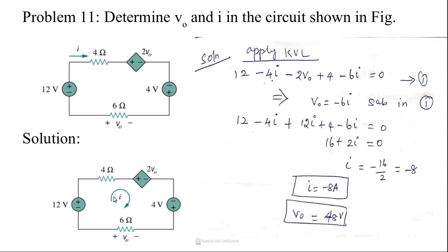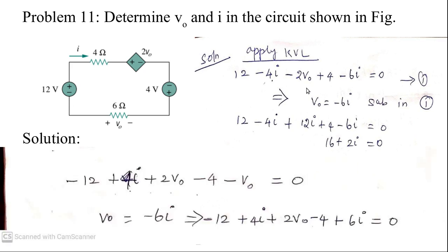For resistors in this method, take them as negative only. When writing voltage values, consider the plus and minus terminals. I take V0 with current flowing in that direction, so V0 equals minus 6i. Substituting: 12 minus 4i plus 12i plus 4 minus 6i equals zero, from which I find the value of i.